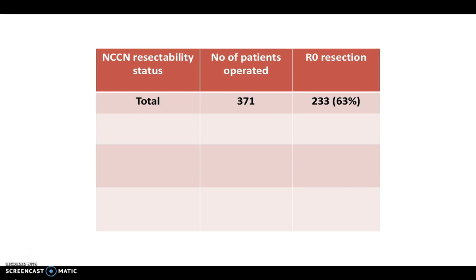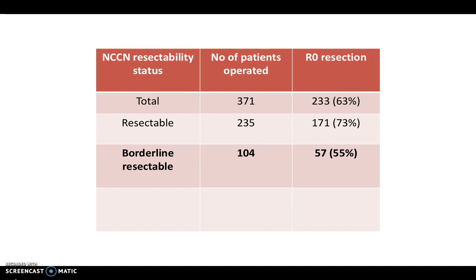Out of the 371 patients, only around 63% had an R0 resection. As expected, it was slightly higher in the resectable tumor category — around 73% of patients with resectable disease had an R0 resection margin, compared to 55% in borderline resectable tumors and 16% in locally advanced or unresectable tumors.